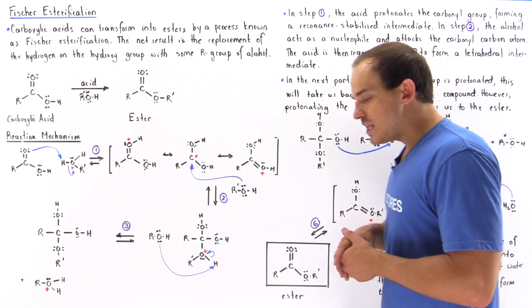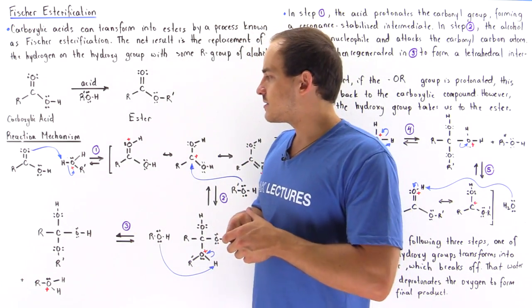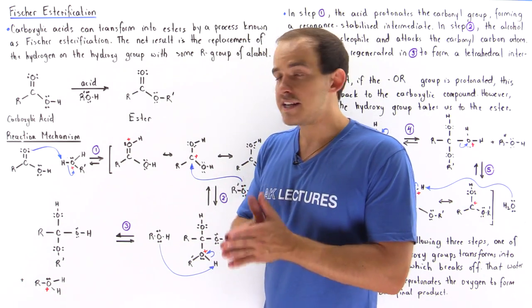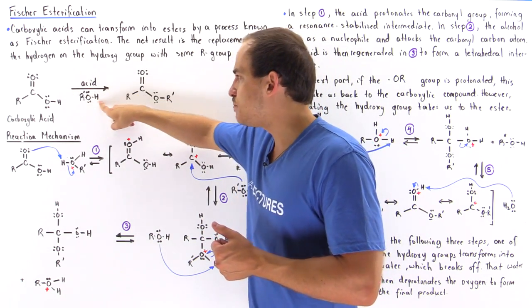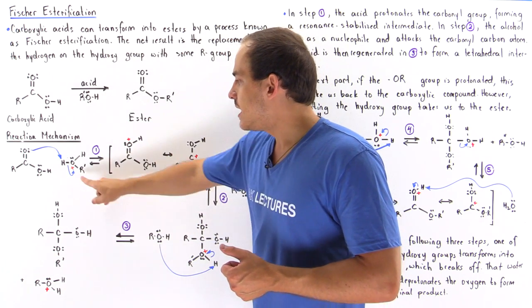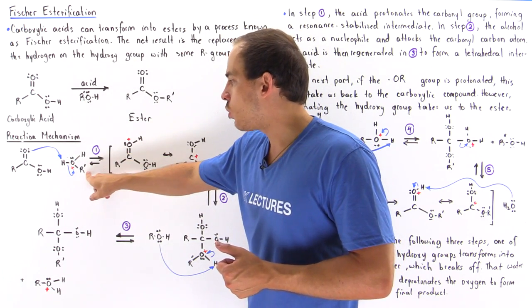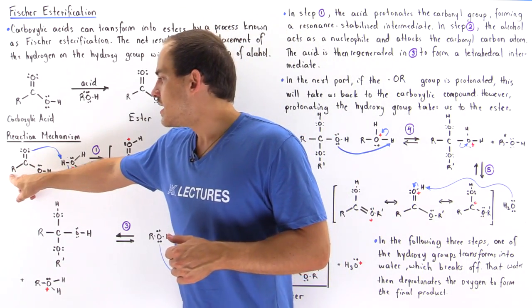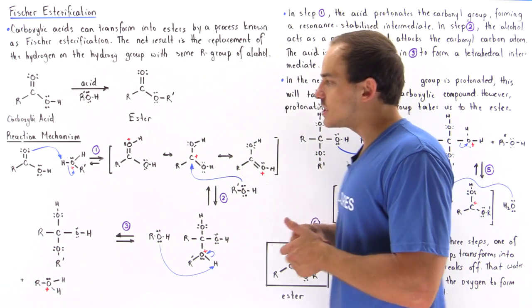Let's begin with step number one. We take our carboxylic acid and mix it with our acid. In this case the acid is basically the conjugate acid of this base, our alcohol. Notice that I'm designating the hydrocarbon R group of this alcohol with R' to differentiate it from the hydrocarbon R group of the carboxylic acid.